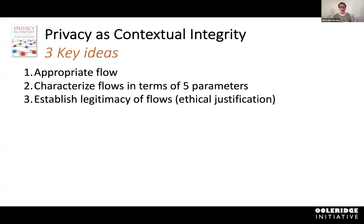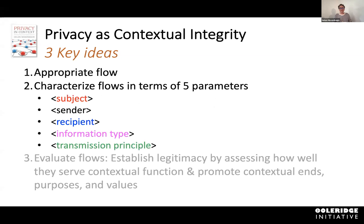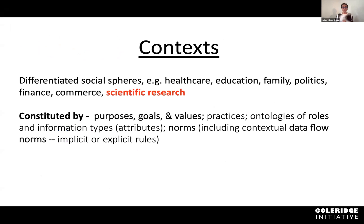One is that privacy is appropriate flow. Two, in order to understand privacy implications, you have to characterize the flows of whatever you're doing with the data in terms of five parameters. And three, contextual integrity proposes that you must be able to identify the subject, the sender, the recipient, the information type, and the transmission principle.